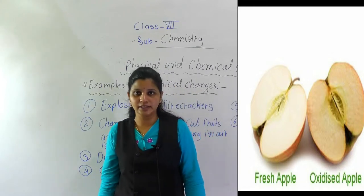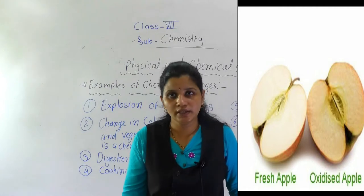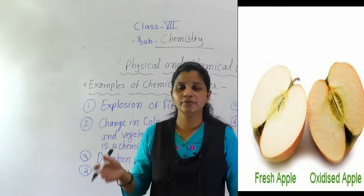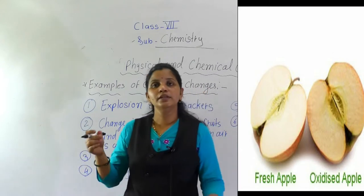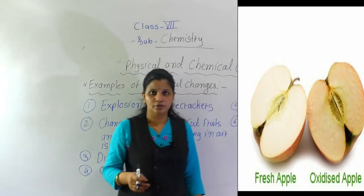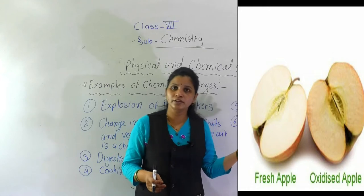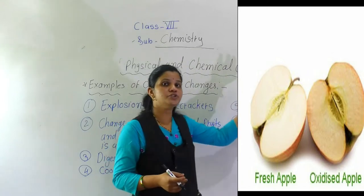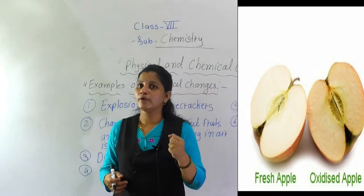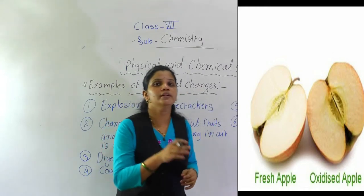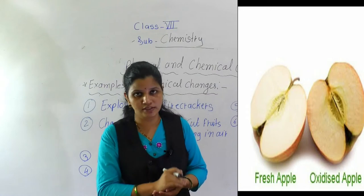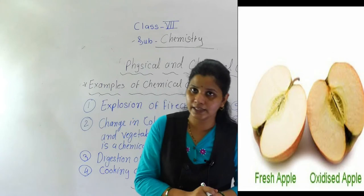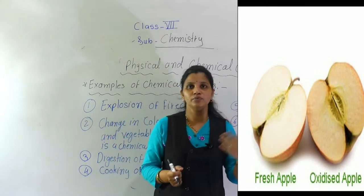Apple contains malic acid, and oxygen is present in the air. When the oxygen reacts with the malic acid present in the apple, it turns brown. Here the picture shows a fresh cut apple and how the color changes to brown after some time. Because apple contains malic acid and oxygen in the surrounding air reacts with it, it turns brown.